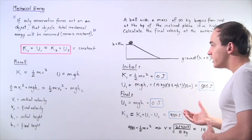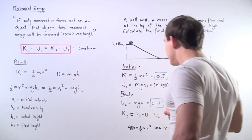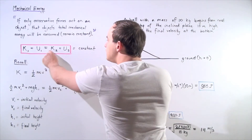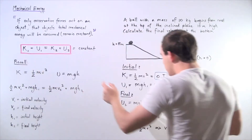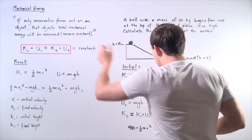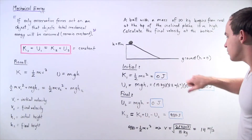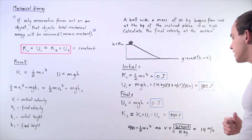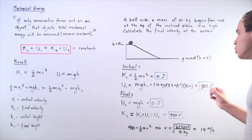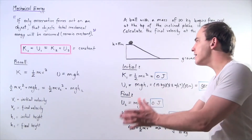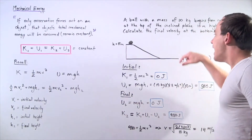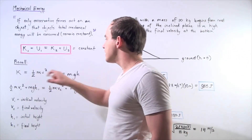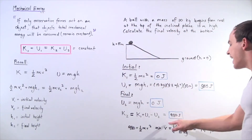Equivalently, we can simply use this equation. Solving for K2, we bring everything to the left side and leave K2 on the right: K2 = K1 plus U1 minus U2. We know K1 is zero, U1 is 980 joules, and U2 is zero. Plugging those values in, we get 980 joules. All the gravitational potential energy has been transformed into kinetic energy. We take our formula for kinetic energy and equate it to 980 joules.